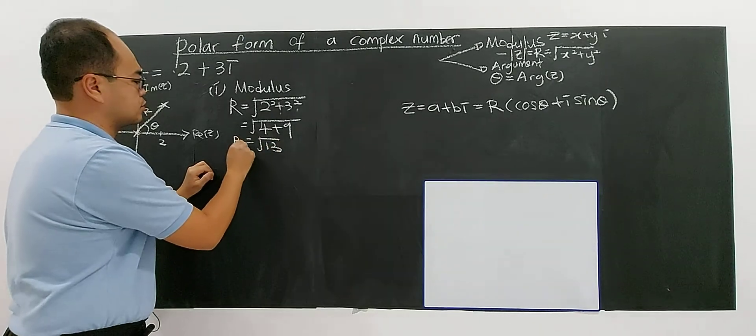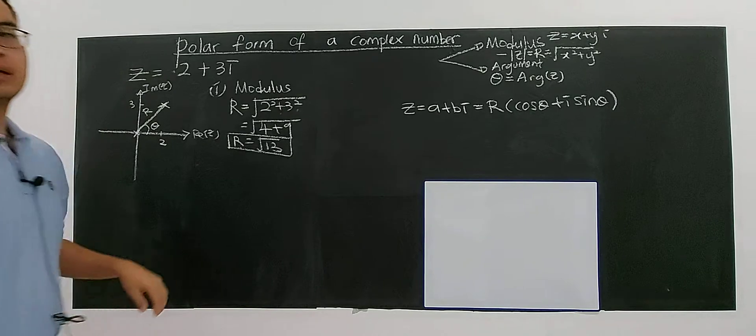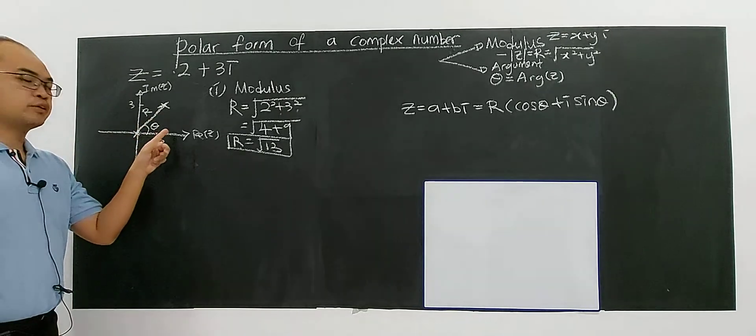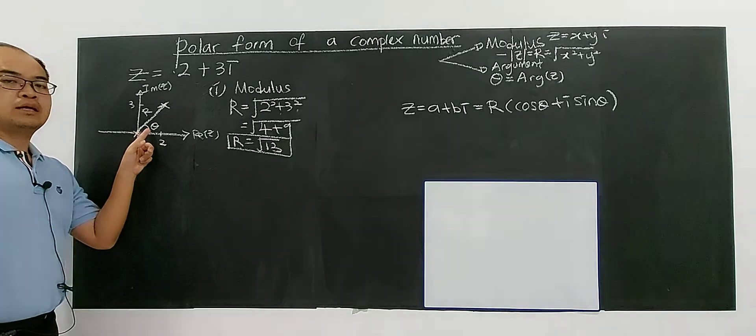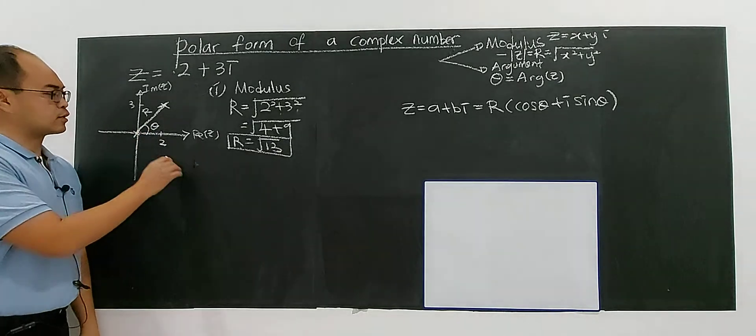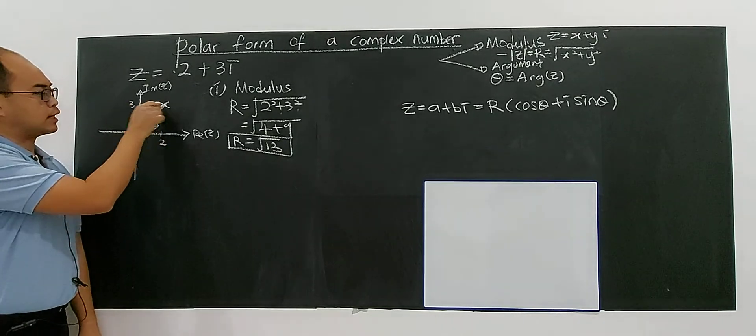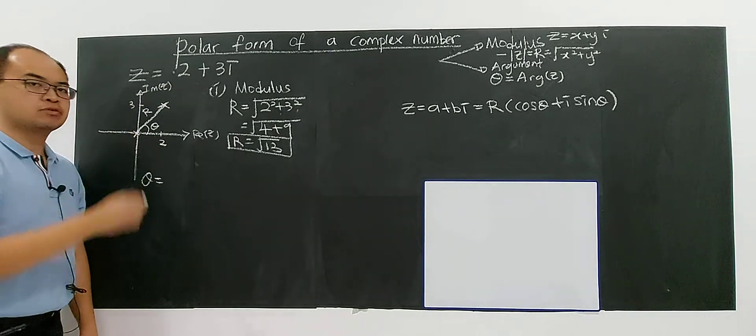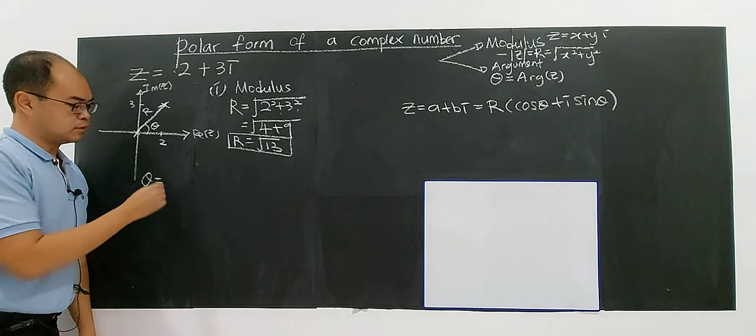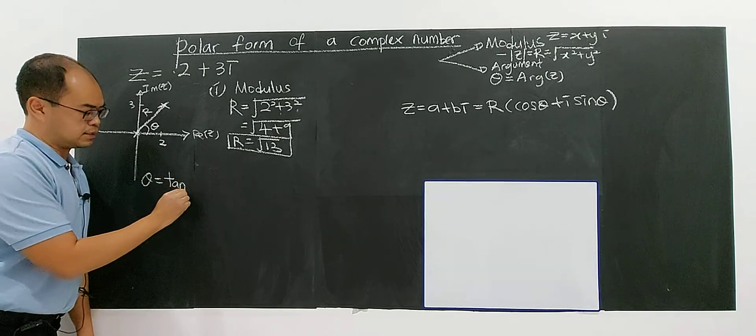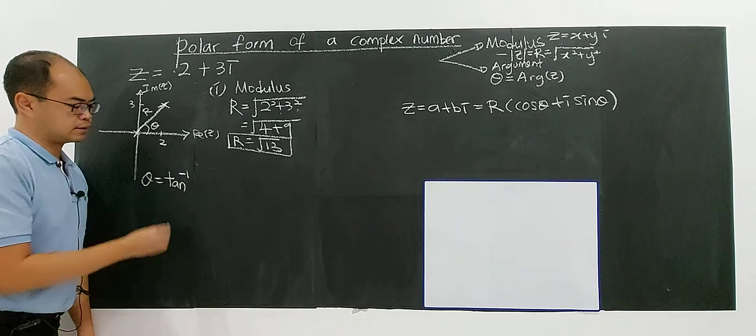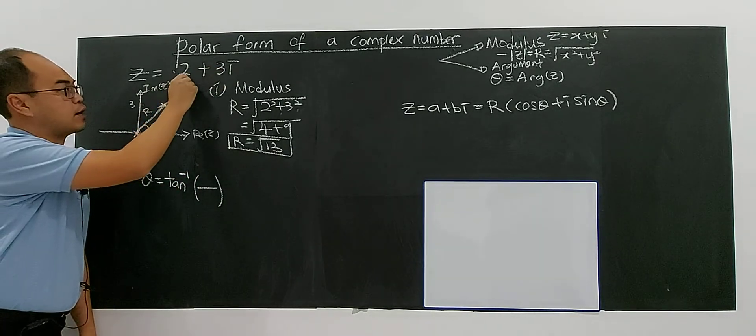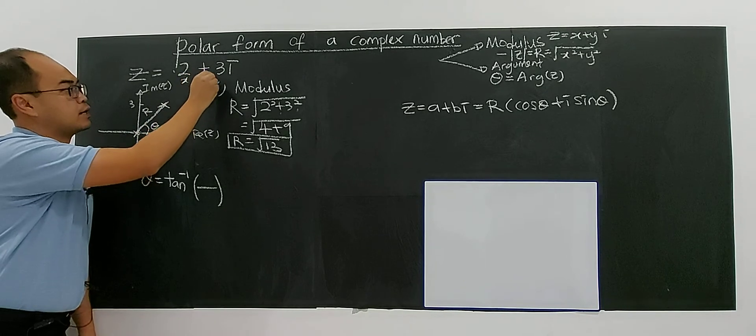For the argument in the first quadrant, where theta is an acute angle, you can look at the formula: arctan of y over x. You can refer to the previous lesson for the argument formula in the first quadrant.